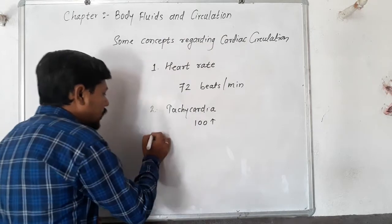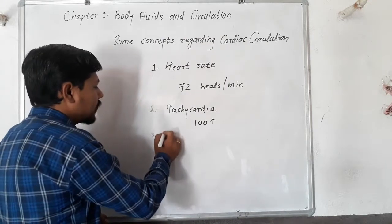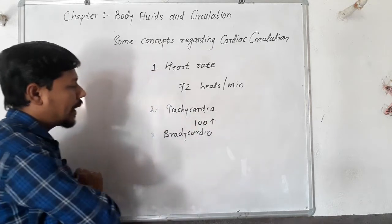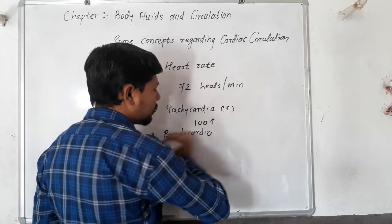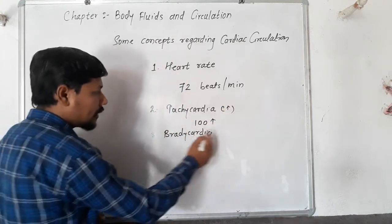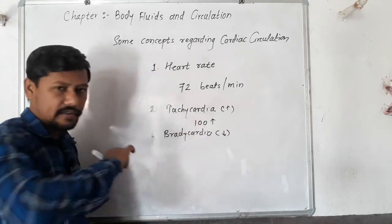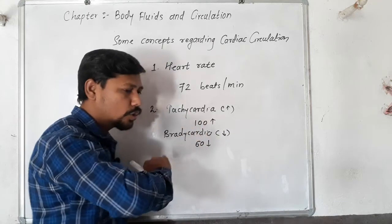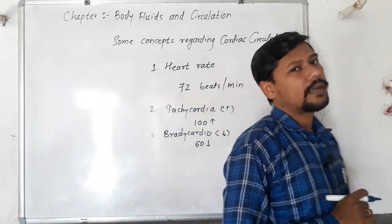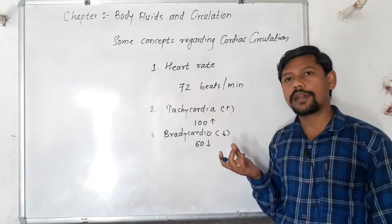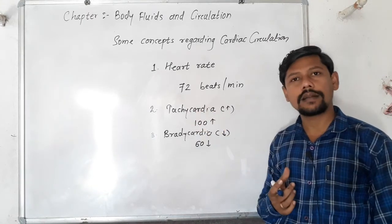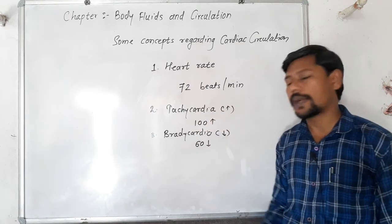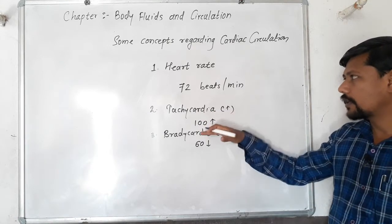The third term is bradycardia. Bradycardia means when the heart rate falls below 60 beats per minute. So, if the heart rate is above 100, that condition is tachycardia, and if it is below 60, the condition is bradycardia. These are two terms related to increase and decrease in heart rate.